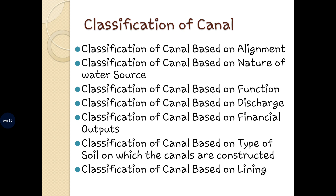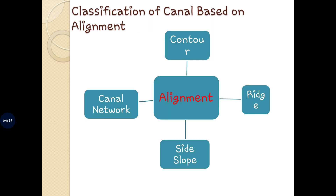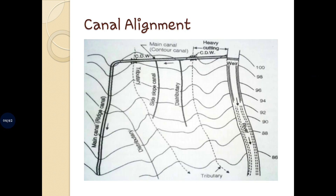The first classification is based on alignment. It can be further subdivided as contour canals, ridge canals, side slope canals, and canal networks. First is the contour canal — when the canal is aligned partially parallel to the contour of the area, it is called a contour canal. It is not possible to align the canal along the watershed or the ridge of the hilly area, so in this situation the canal can be aligned as a contour canal.